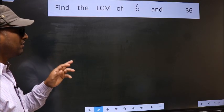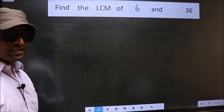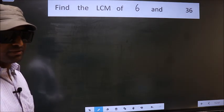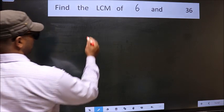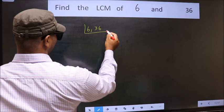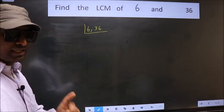Find the LCM of 6 and 36. To find the LCM, first we should frame it in this way. That is 6, 36. This is your step 1.